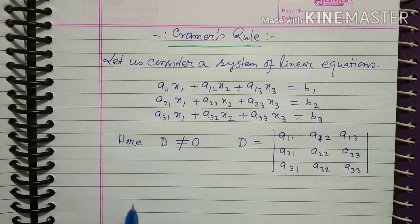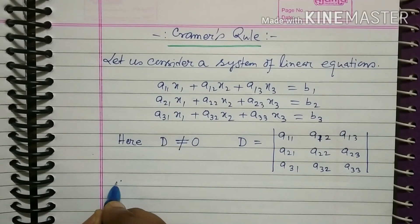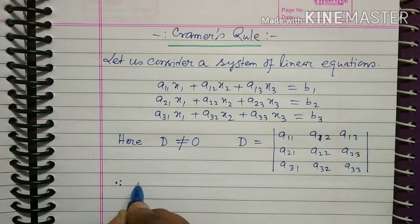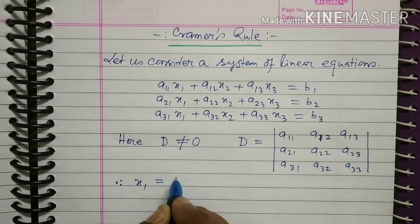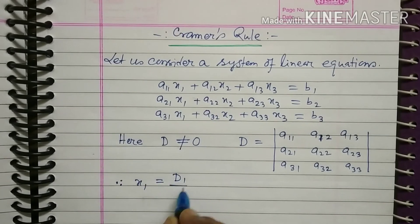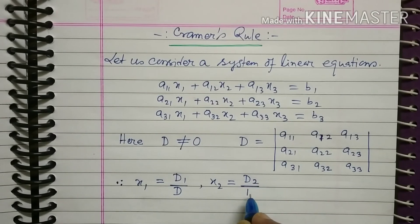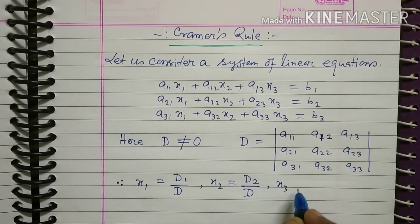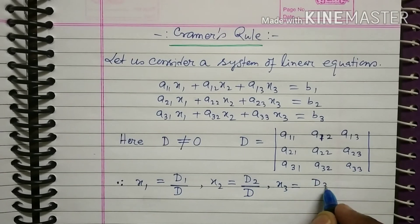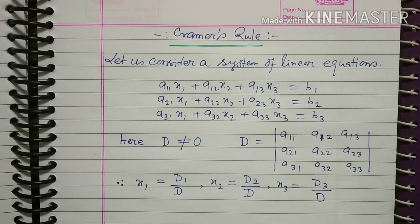Therefore, you write down the solution: x1 is equal to D1 by D, x2 is equal to D2 by D, and x3 is equal to D3 by D.